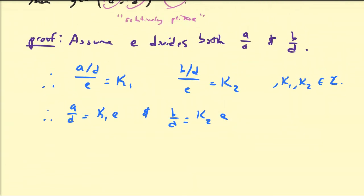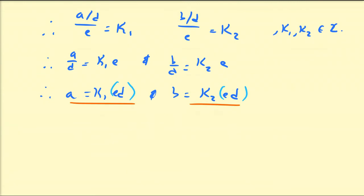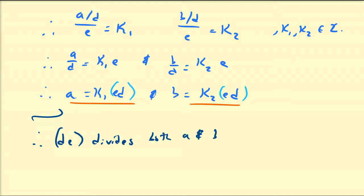Continuing to rearrange, we multiply both sides by D. So A equals K1 times ED, and B equals K2 times ED. Associating ED together, we can see a very important characteristic: this means that DE divides both A and B.